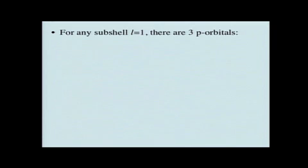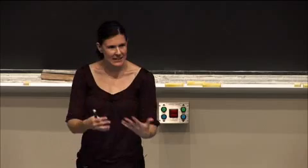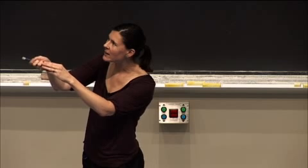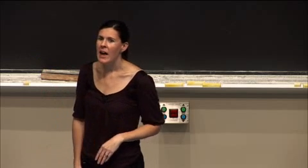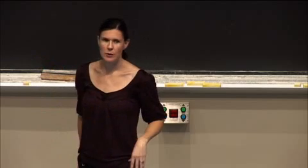If we have l equal to 1, we can have three different total orbitals with that subshell. If the final quantum number m equals plus 1 or minus 1, we're dealing with a p_x or p_y orbital. Remember, p_x and p_y are some linear combination of the m equals plus 1 and m equals minus 1 orbitals. If we talk about m equal to zero, we're looking at the p_z orbital.